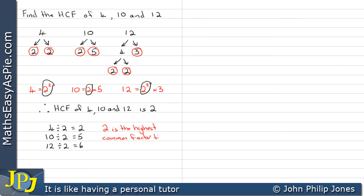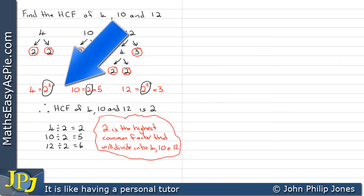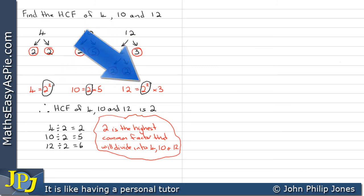That confirms it is a common factor, and we can see it's the highest common factor that will divide into 4, 10, and 12. The key point again: we noted we have 2², a 2, and another 2² — we didn't choose the 2². We chose the 2.